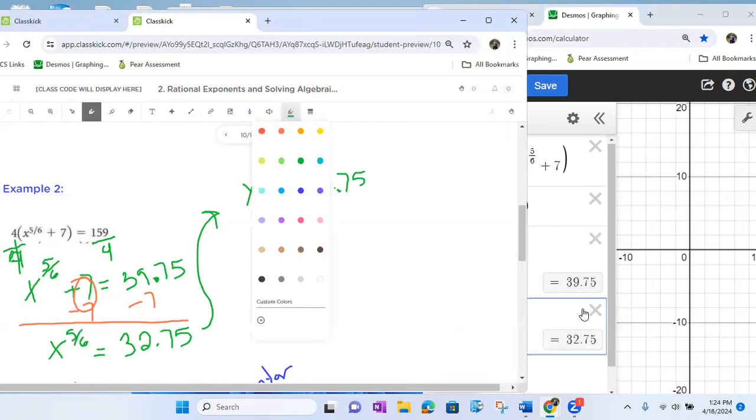And now what we're going to do is we're going to get rid of that 5 sixth power. Now, how do we get rid of that 5 sixth power? We want it to be an x to the first power. That's how we solve these. So what I'm going to do is I'm simply going to take the fraction that is there, the 5 over 6, and I'm going to flip it.